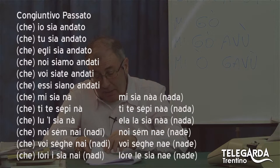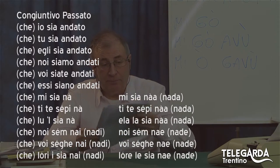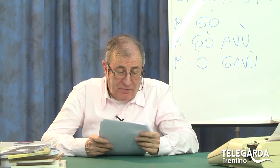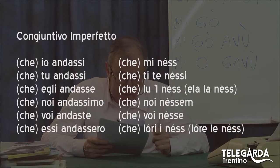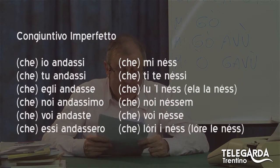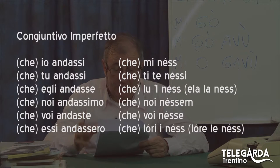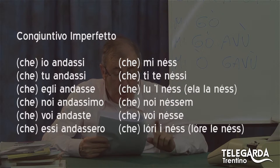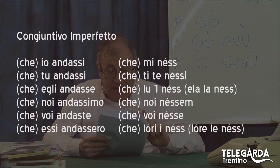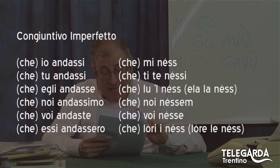Ripeto, un bel scioglilingua, però d'altro canto il dialetto è questo qua. Congiuntivo imperfetto — quello delle s, dico sempre — che io andassi, che tu andassi, che lì andassi, eccetera. Che mi ness (con due s), che ti te nessi, che lul ness o che ella la ness, che noi nessem, che voi nesse, che lori i ness o che lore le ness.